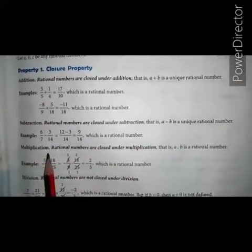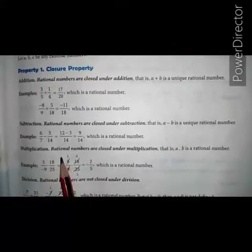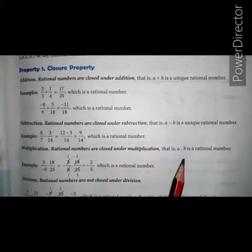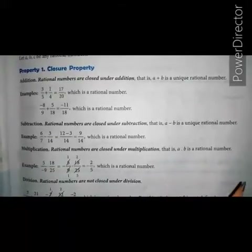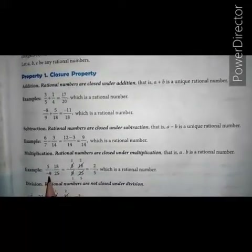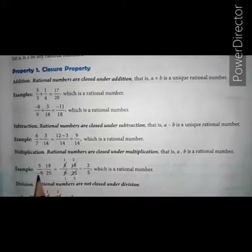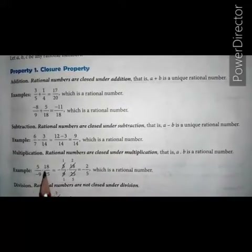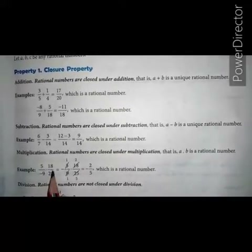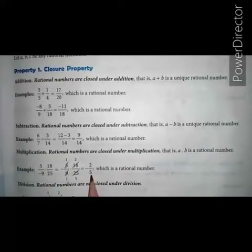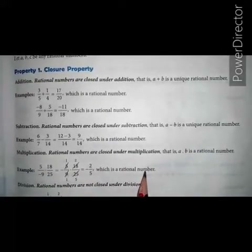Next is multiplication. Rational numbers are closed under multiplication. That is, a multiplied by b is a rational number. For example, 5 upon minus 9 multiplied by 18 upon 25 — these two are rational numbers. When we multiply them, we get minus 2 upon 5, and minus 2 upon 5 is also a rational number.